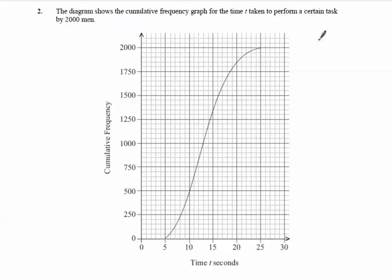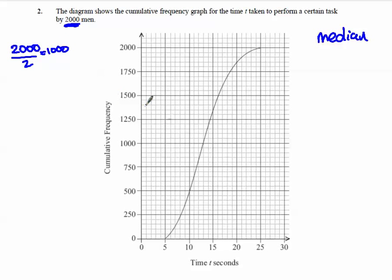Let's find the median. Because we have 2,000 people and we don't know the raw data figures — we just have this curve and we're estimating — the median is halfway, so we halve 2,000 to get 1,000. We go to 1,000 on our cumulative frequency axis, go across to touch the curve, then go down and read that value. The median is 13.